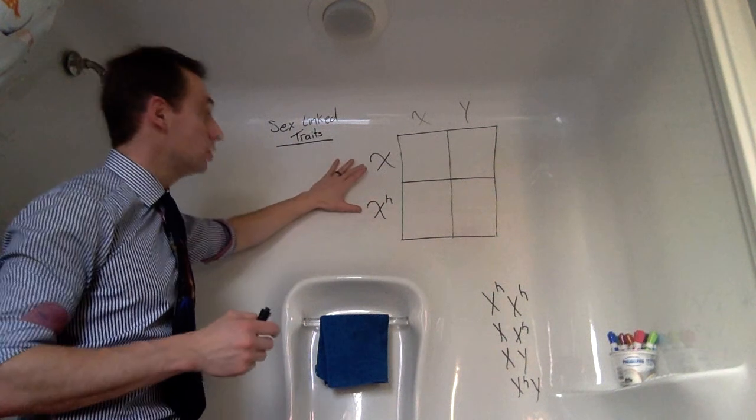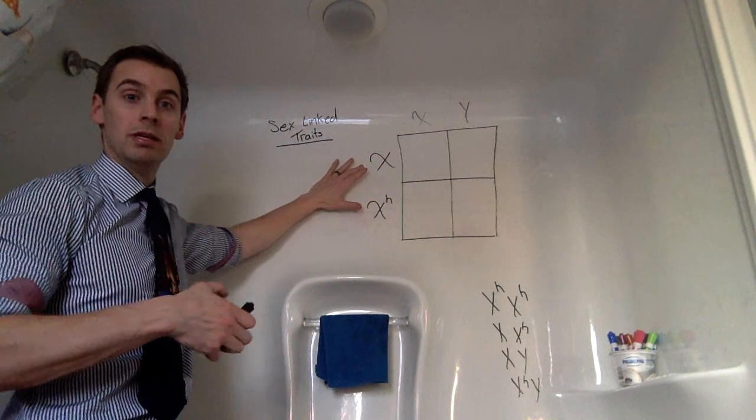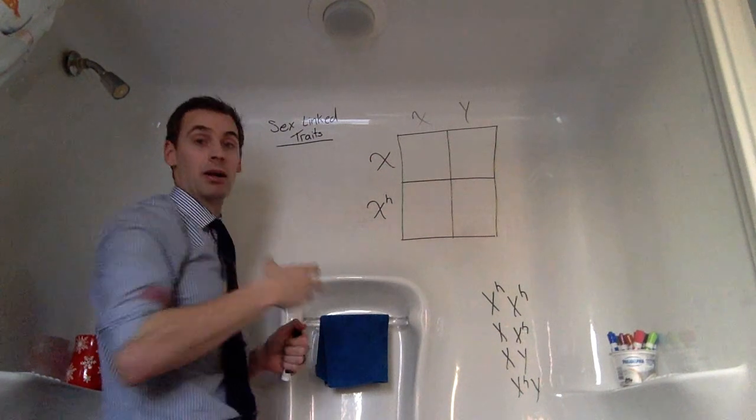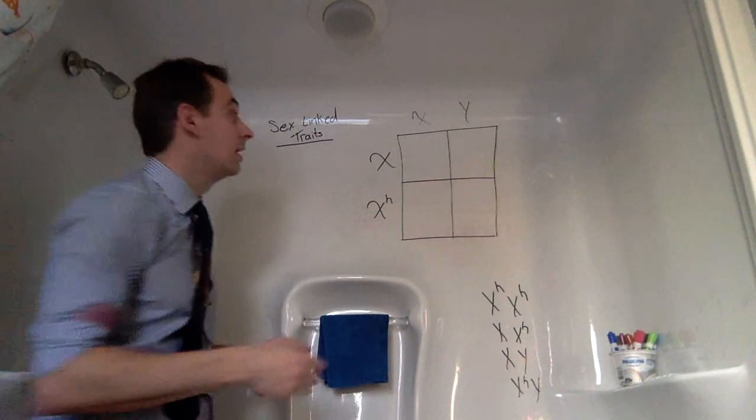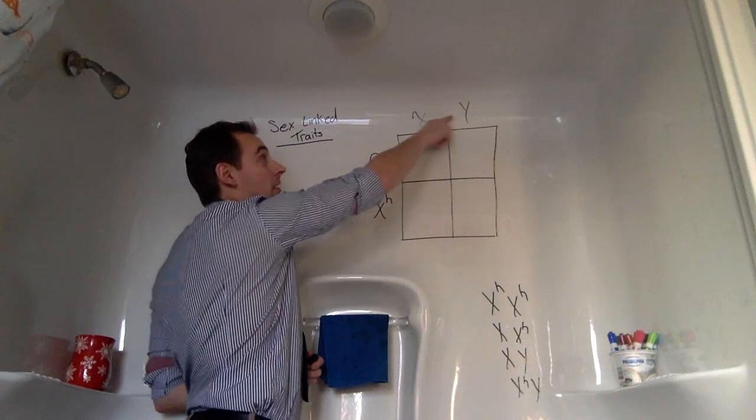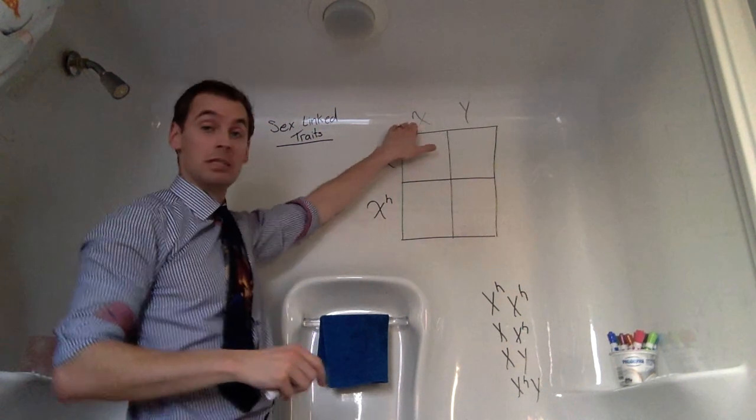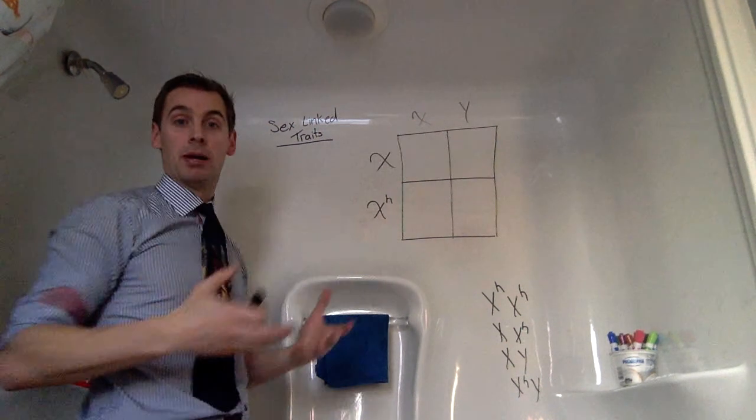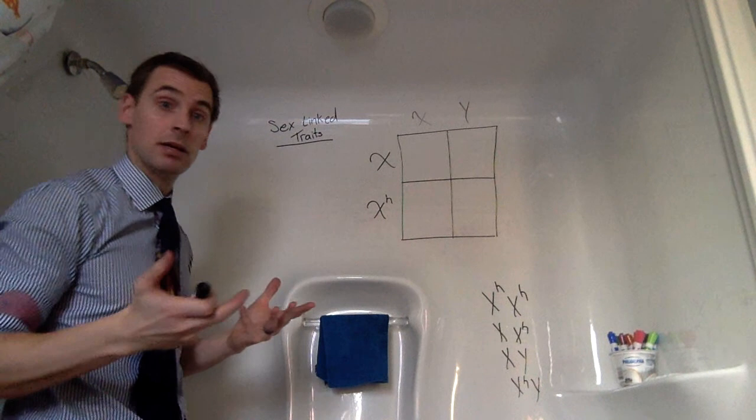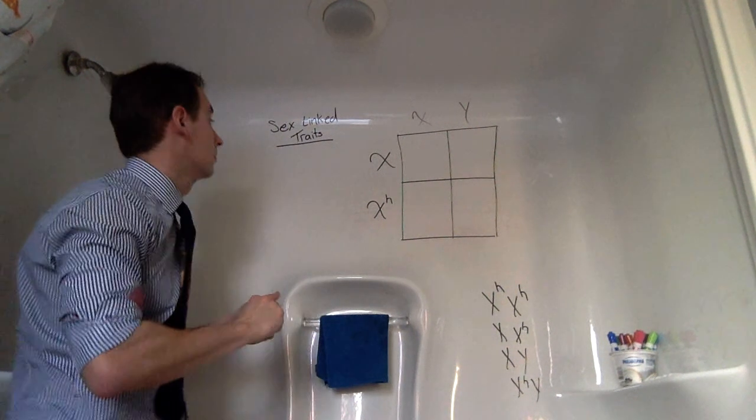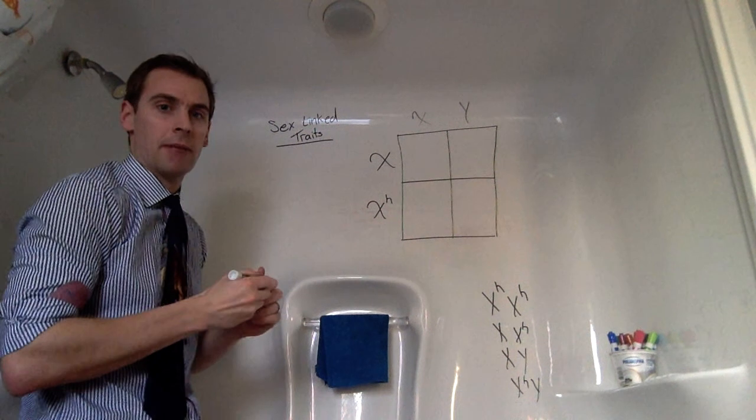Now in females, because they have two X's, in order for these sex-linked traits to appear, both X's would need to be recessive, carrying the trait. In males, because males only have one X, if that X chromosome has the recessive trait, it tends to appear. Now a very common one is colorblindness, which we could use as an example as well, but we're going to carry on with hemophilia for today.